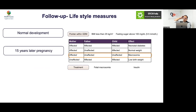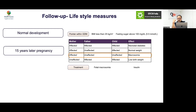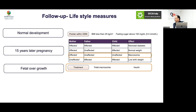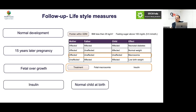Fifteen years later, this same patient is pregnant. GCK mutations carry specific pregnancy risks — fetal overgrowth or macrosomia can occur. If the fetus has inherited the mutation, there is a risk of fetal macrosomia, and treatment should be considered in that scenario.